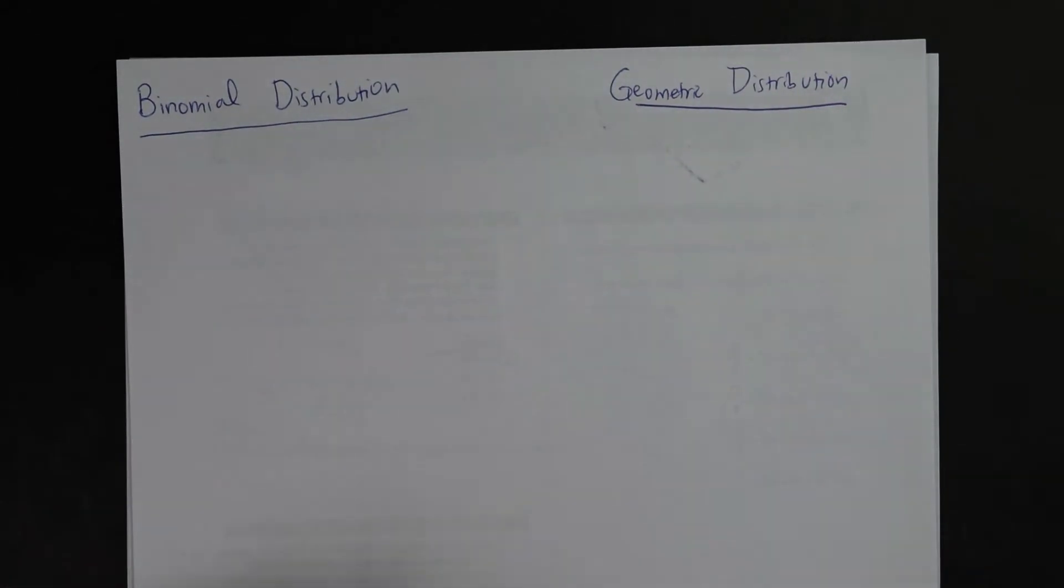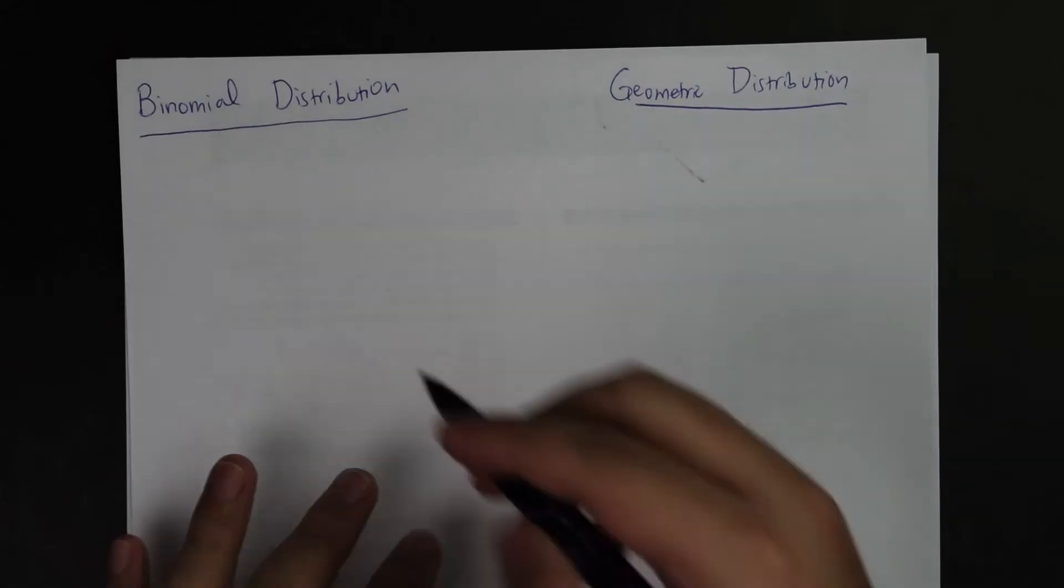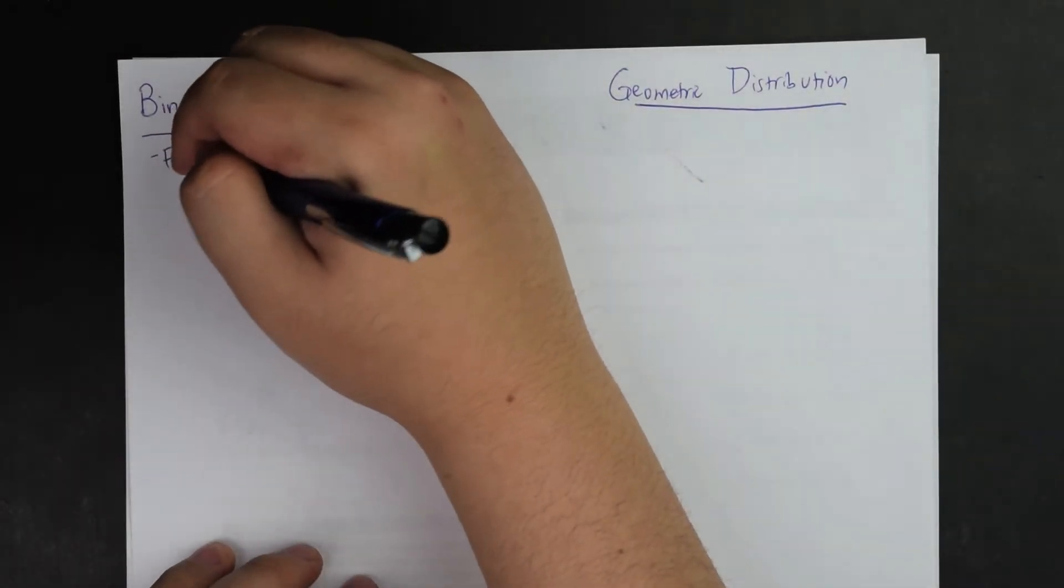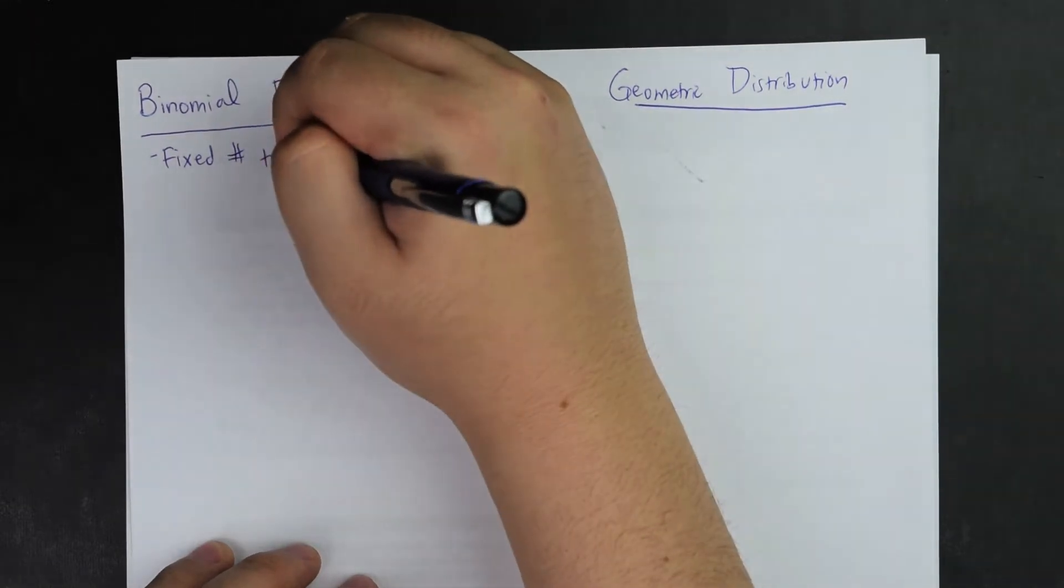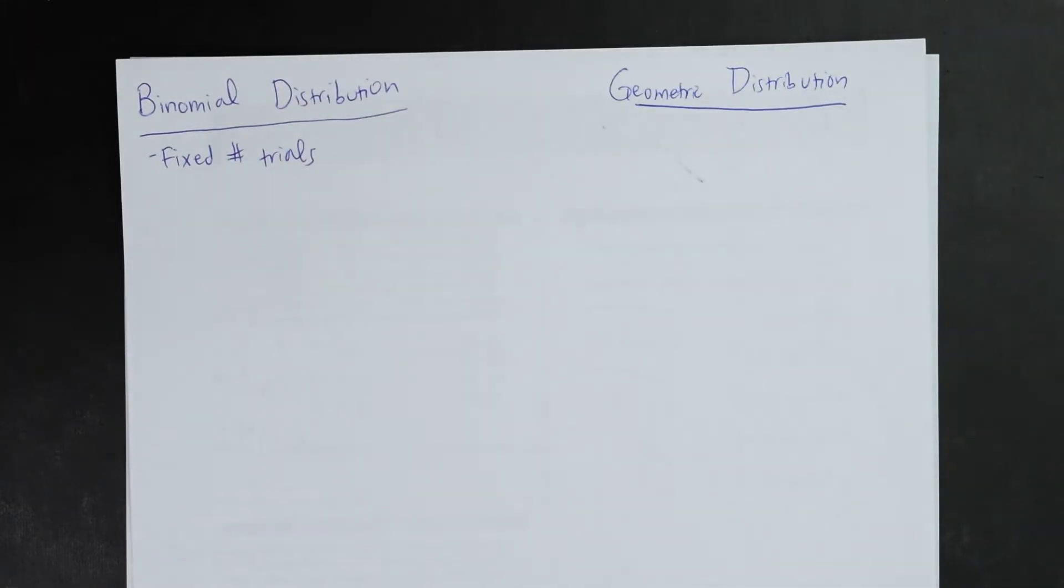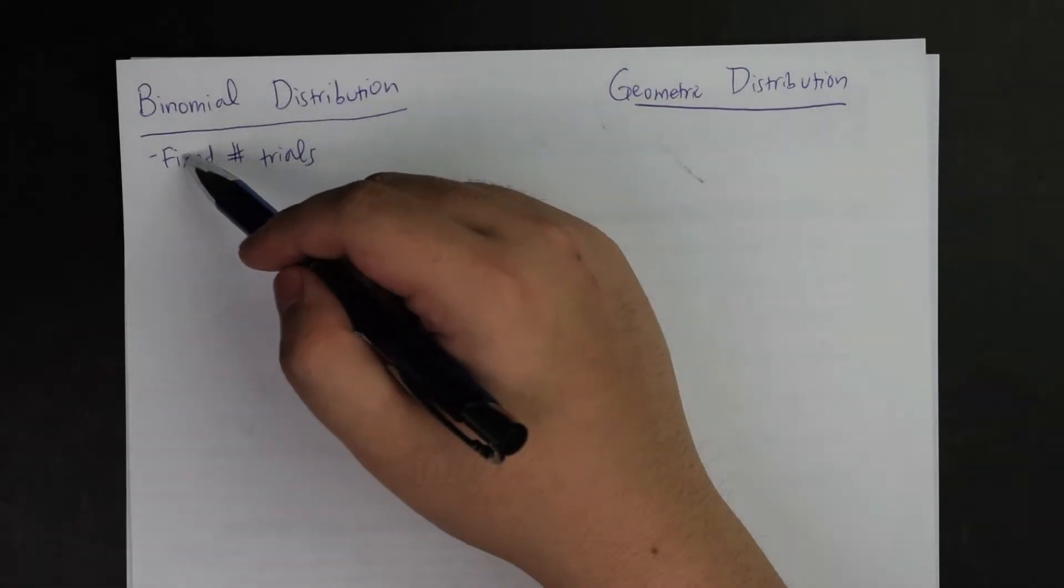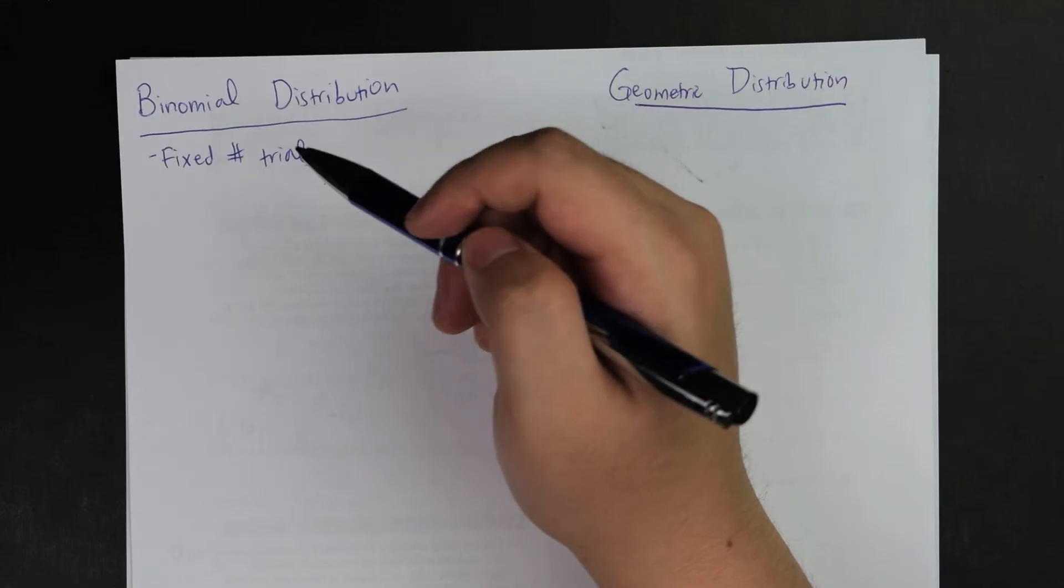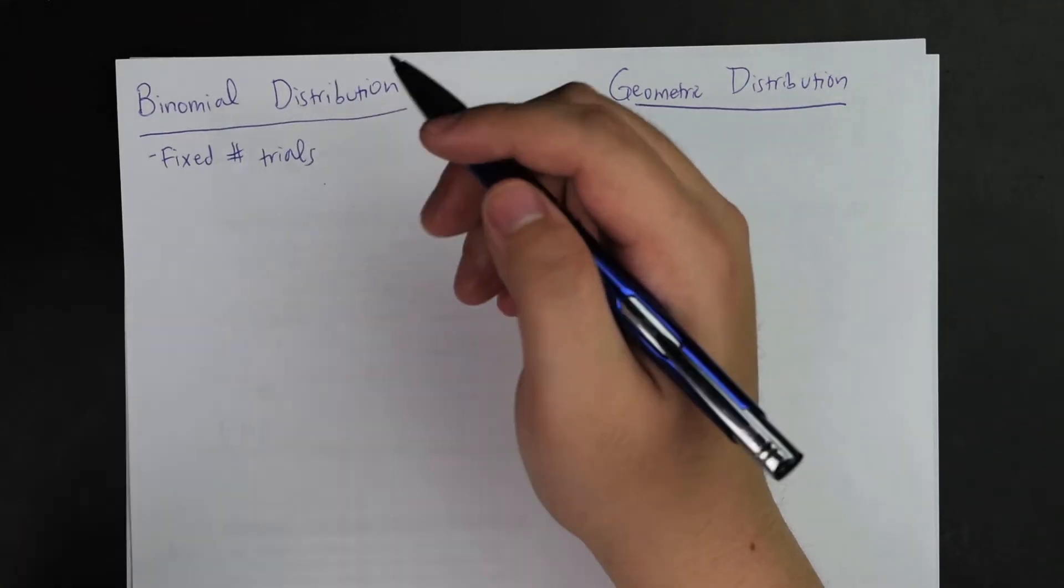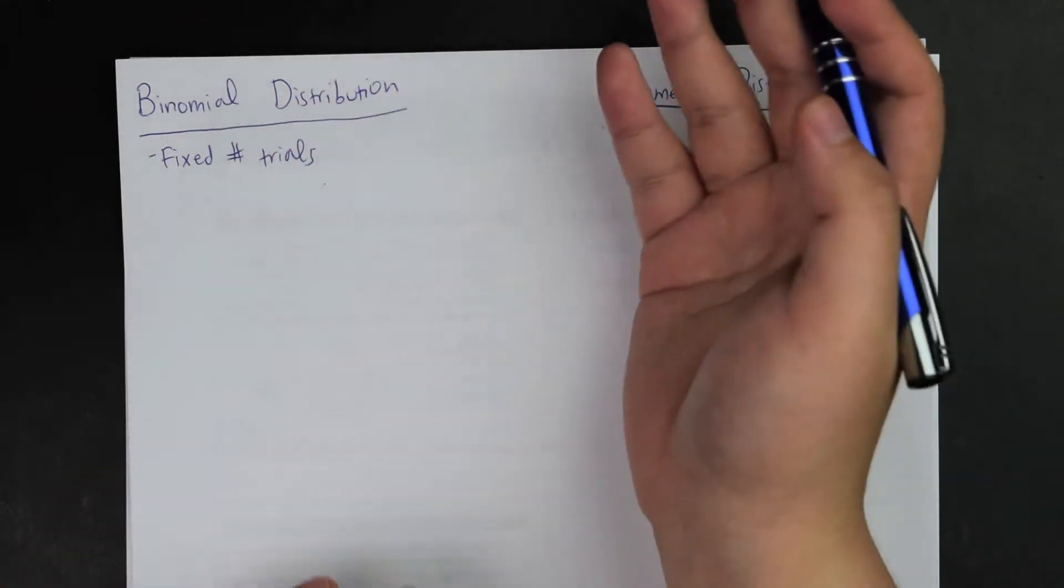Binomial distribution, first things first, the property is that it requires a fixed number of trials. When I talk about fixed number of trials, that means if I tell you I have 10 attempts doing this thing, or 20 attempts, or 30. Usually it is very clearly stated how many trials exist. This is just general trials. It doesn't have to be specifically this many fails before success.